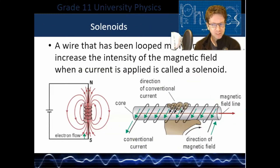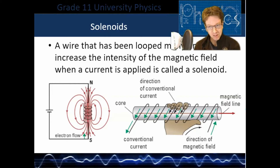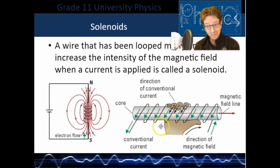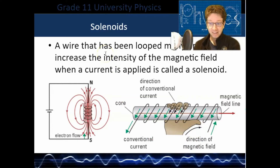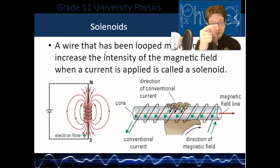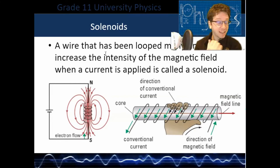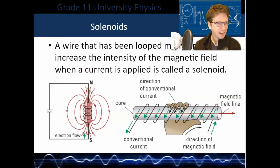Next, solenoids. A solenoid is where you take a wire and coil it around some sort of cylindrical object — sometimes we just call it a coil. If you put a current through that solenoid, you get a magnetic field going through the center of it. To figure out the direction of that field, take your right hand, curl your fingers in the direction the current is moving around the solenoid, and your thumb points in the direction the magnetic field goes through the center. Those two right hand rules go together.